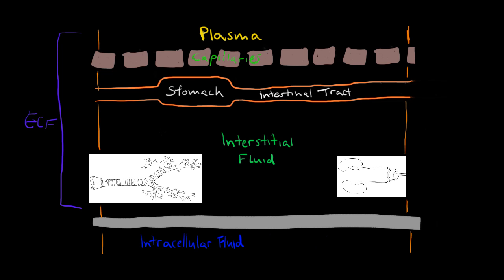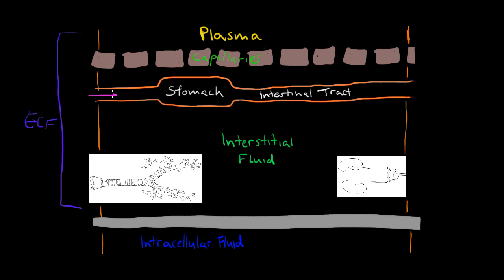Interstitial spaces include tissue and lymph, and we see it's surrounding many of our organs — the stomach, the intestinal tract, the lungs, and the kidneys. We can also see a pattern here related to how fluids enter and exit the body.